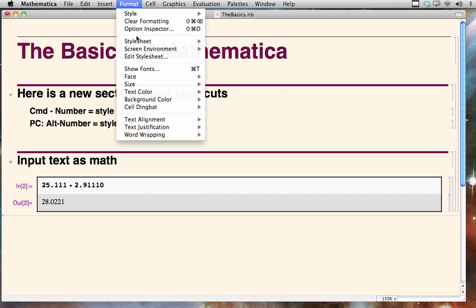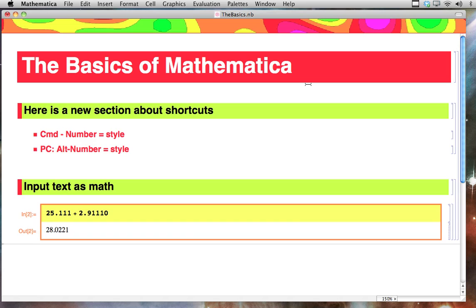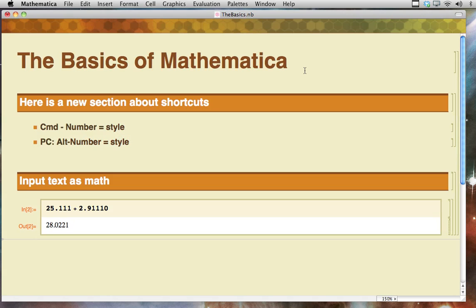Some of my more daring students will pick Format, Style Sheet, Creative, Primary Color. Ooh, to me that looks a little garish. I think a good compromise that many students use is Format, Style, Creative, Natural Color. Yeah, that looks pretty nice. So, Style Sheets, Cells, Mathematica Notebooks, these are all kind of the basics of how to work in Mathematica.